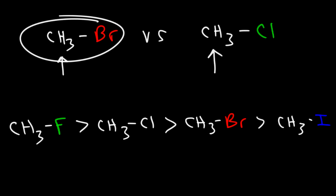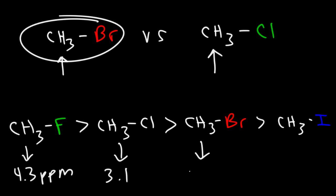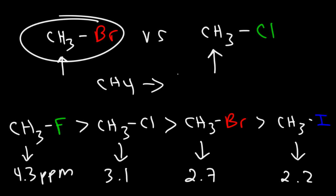According to one textbook, here are the values for these compounds. The chemical shift for methyl fluoride — that is, the protons on it — is about 4.3 ppm. For methyl chloride, it's 3.1. For methyl bromide, it's about 2.7. And for methyl iodide, 2.2. For methane, if you want to compare that to methyl iodide, it's much less — about 1.0 ppm. So the presence of a halogen will greatly increase the chemical shift of these compounds.